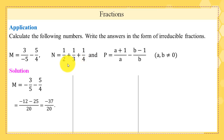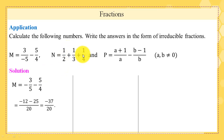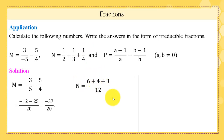n = 1/2 + 1/3 + 1/4. We take the common denominator of 2, 3, and 4, which is 12. So we multiply 1/2 by 6, 1/3 by 4, and 1/4 by 3. We get n = (6 + 4 + 3)/12 = 13/12.